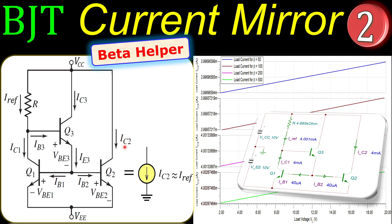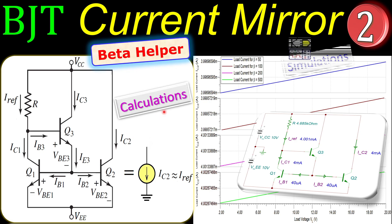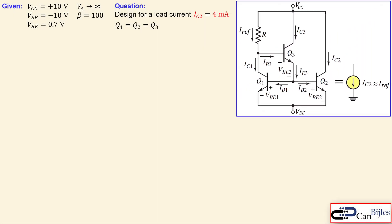We will see that IC2, which is our load current, is approximately equal to the reference current. We will also examine parameters like the variation in beta and what kind of effect it has on the load current. We will do that step by step with all calculations and SPICE simulations. Let's look at our circuit — we have three transistors: Q1, Q2, and Q3.